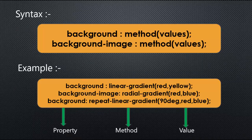The syntax for gradients uses the background property. If using the background property, the method should be linear-gradient, repeating-linear-gradient, or radial-gradient. Values should be colour names, RGB values, HSL values, HSLA values, or HEX values. For example: background: linear-gradient(red, yellow) — where red and yellow are the values, linear-gradient is the method, and background is the property.